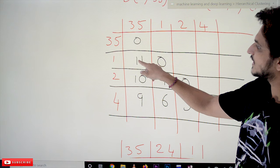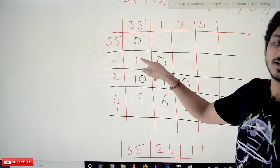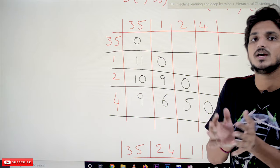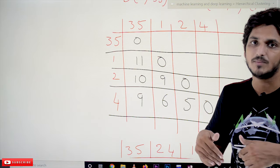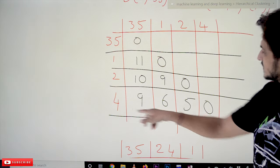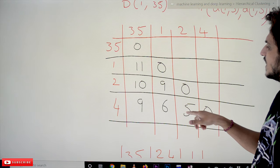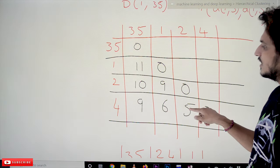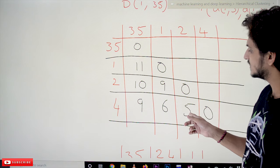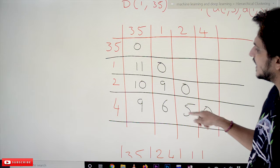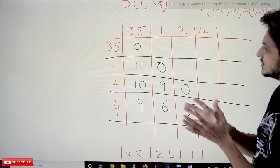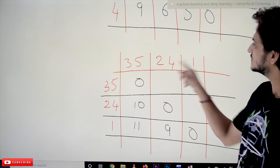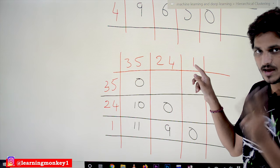We update the distance matrix with these new values and again pick the clusters with minimum distance. The minimum value is 5, which is between the 2nd and 4th points, so cluster 2 and cluster 4 are combined as one cluster. Now we have 3 clusters: cluster (3,5), cluster (2,4), and cluster 1.